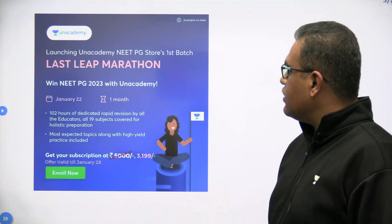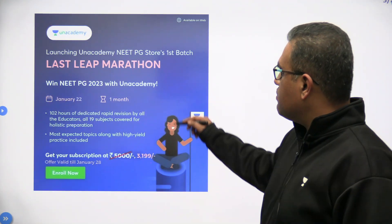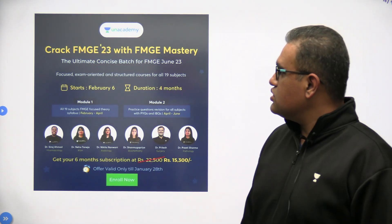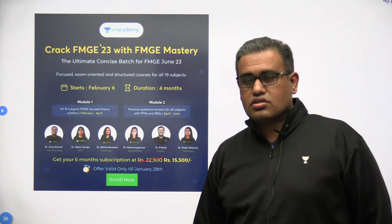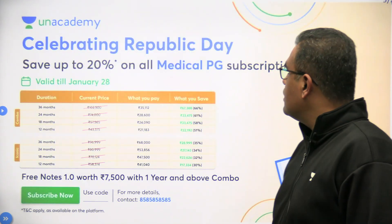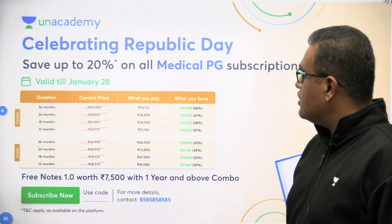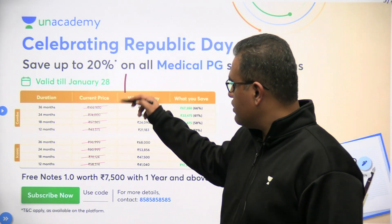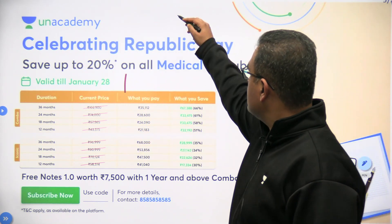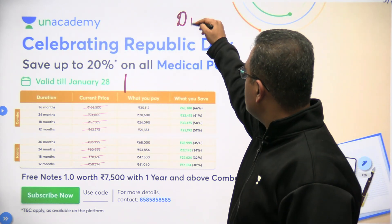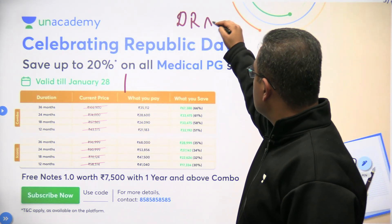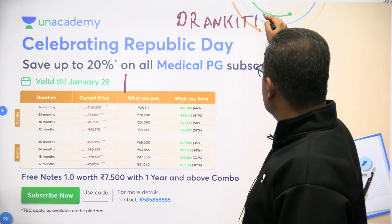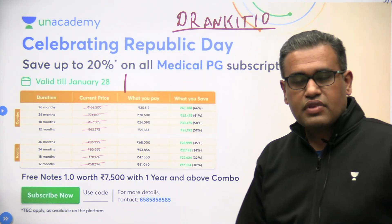These are NeatPG Vitals. We have this Crack FMGE — it starts on 6th of February, and Republic Day, so 28th of January is the last day. You can avail the offers. Use the code Dr. Ankit 10 if you wish to.